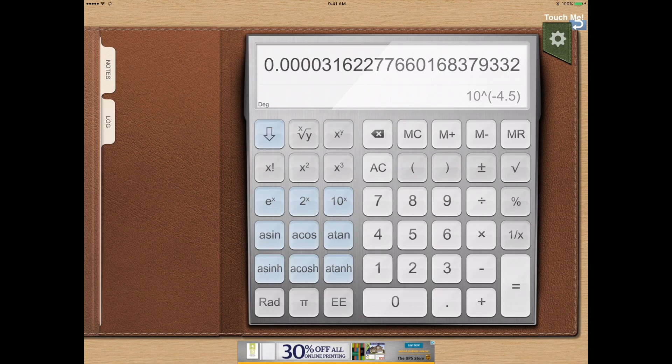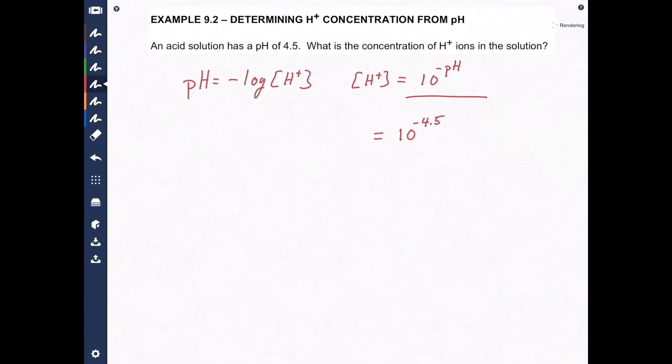It's 0.00003162 molarity. Now here we have two significant figures and right now we have four significant figures. So we have to do some rounding. We're not quite done.